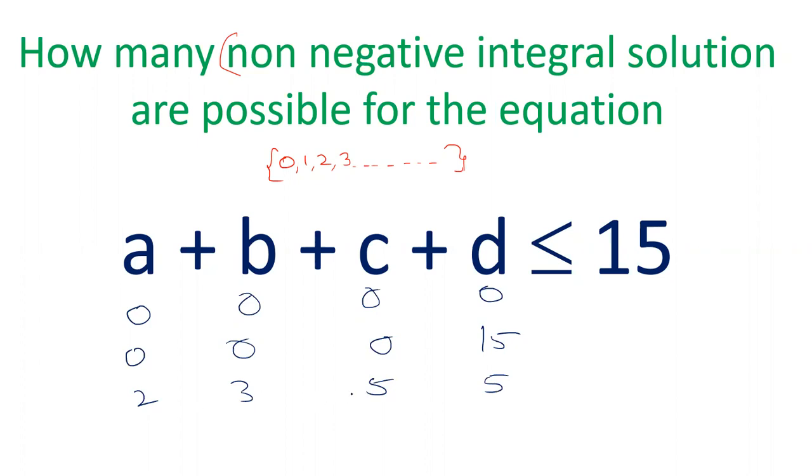So you can take any value, but the sum should be 15 at max, and the value which you cannot take is negative values. You cannot take negative values. You can take any positive value or you can take 0 also.